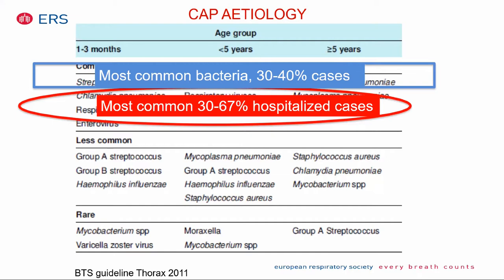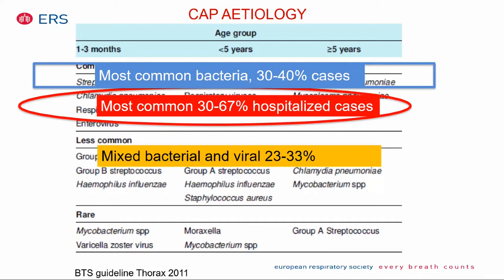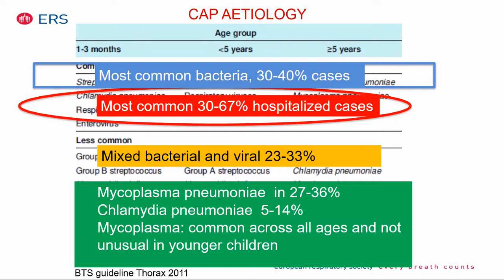Then we have a group with mixed bacterial and viral origins, 23 to 33%. Mycoplasma and chlamydia are actually quite common across all ages and not very unusual in younger children. A recent study from Switzerland, in contrast to this data, showed only 2% of mycoplasma in school-age children as a cause of CAP.